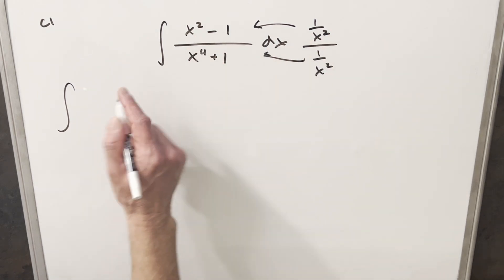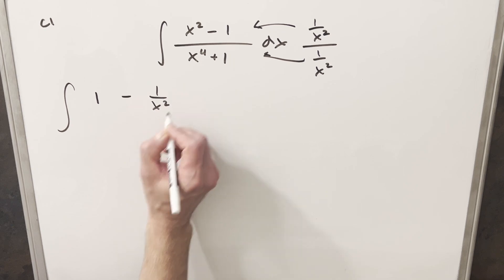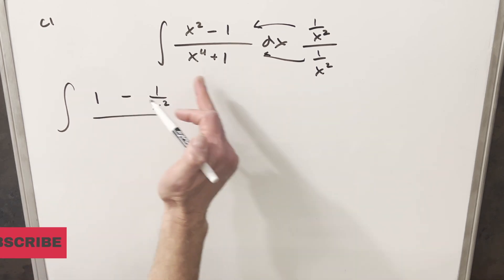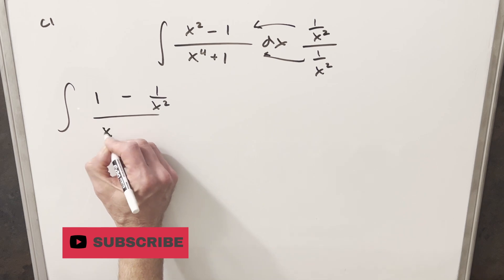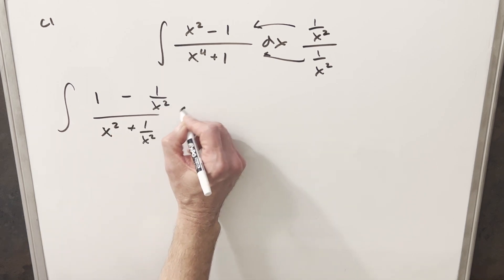1 over x squared times x squared is going to be 1 here. We'll have minus 1 over x squared. Then in the denominator, this first term is going to be x squared, and then we're going to have plus 1 over x squared dx.